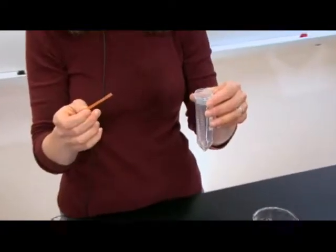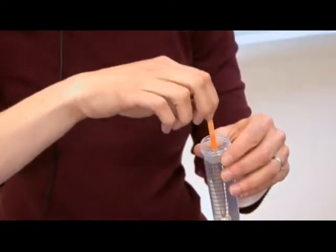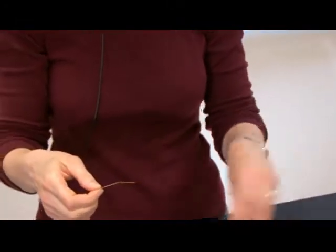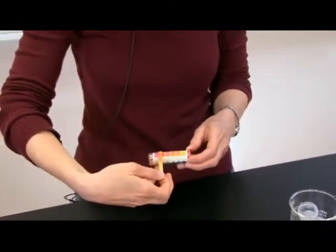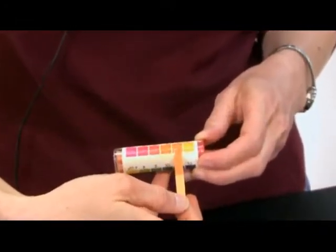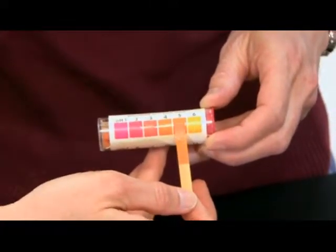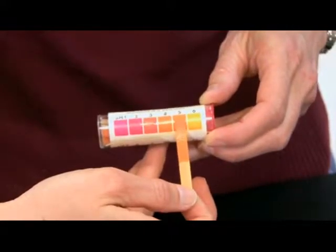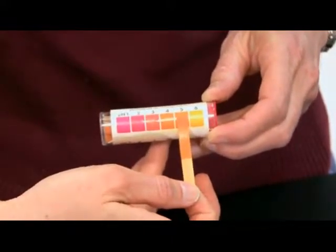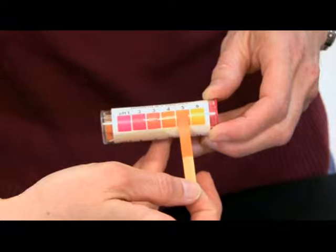So, to determine the pH of this sample of water, I simply dunk my pH strip into the water, and then immediately hold it up against my color chart, and looking at this color chart here, it looks like this sample of water has a pH of approximately 5. I'm just matching the wet part of my pH strip to the color chart.